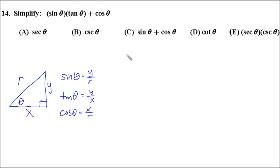And then cosine of theta is the adjacent over the hypotenuse, which is x over r. So, really, when we put all this stuff together, it really becomes more of a, it actually turns into a rational expressions problem. We've got y over r times y over x plus x over r. So, if we multiply these first, we get y squared over rx.